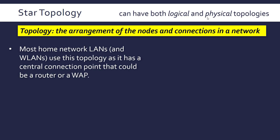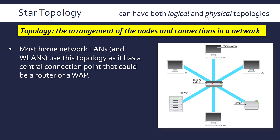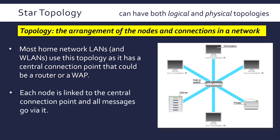First of all, let's talk about the star topology, one of the most common topologies there are. Most home networks will use this topology. In this arrangement, we have a central device — a router, a wireless access point, a hardware switch, and so on — and all the devices, all the nodes, are connected to this central device. So all the messages go via this central device.